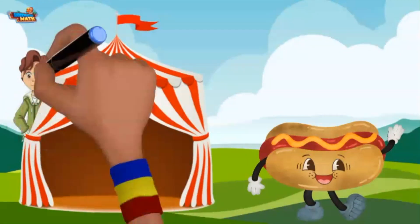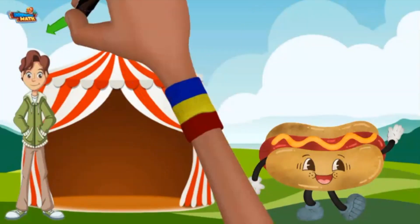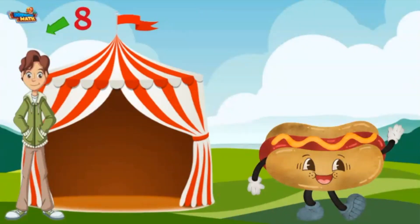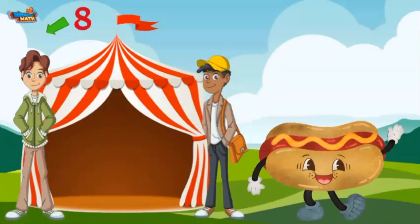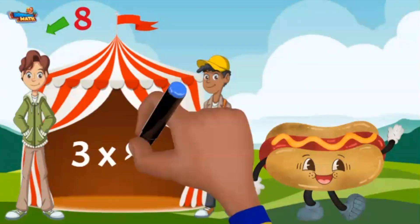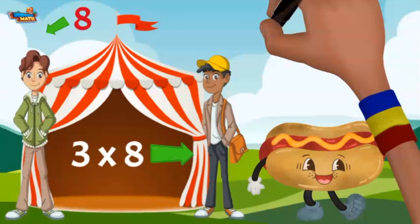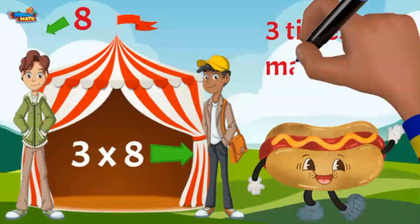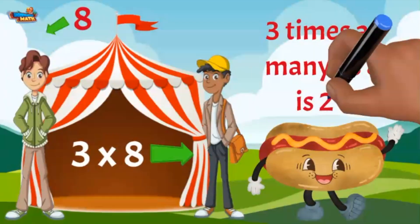This is Sudden. Sudden ate acorn dogs at the carnival. If you think that is a lot, the amount Javier ate is represented as 3 times 8. That means he ate 3 times as many acorn dogs for a total of 24.